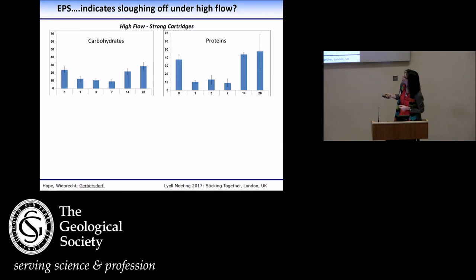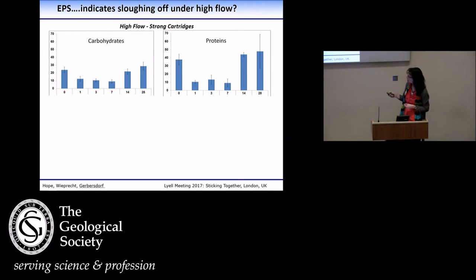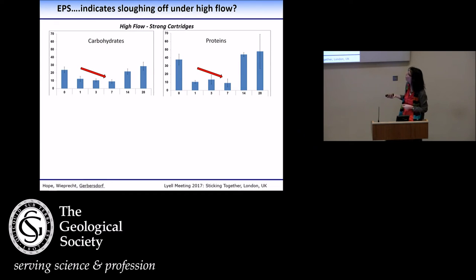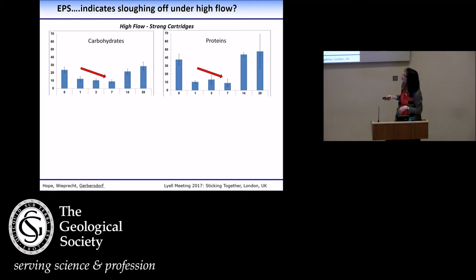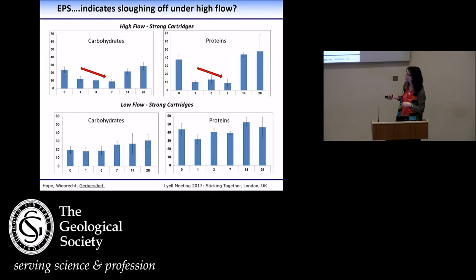Looking at the EPS data, this was confirmed. Just for the strong cartridges under high flow, we saw a significant decrease in proteins and carbohydrates, which is explained by the fact that they had gone off in big chunks — so there was nothing or not much left. While for the strong cartridges under low flow, we could see moderate growth confirmed with an increase in carbohydrates and proteins over time.